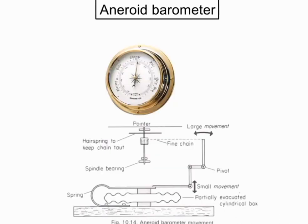An aneroid barometer is another instrument to measure the atmospheric pressure. Inside an aneroid barometer, there is a small cylindrical box. The box has the air pumped out of it. When the air pressure rises, the sides of the cylinder are compressed. A lever is attached to the pivot through the spring and moves the needle as the air pressure squeezes it. The dial behind the needle tells you about air pressure, weather forecast, and altitude.